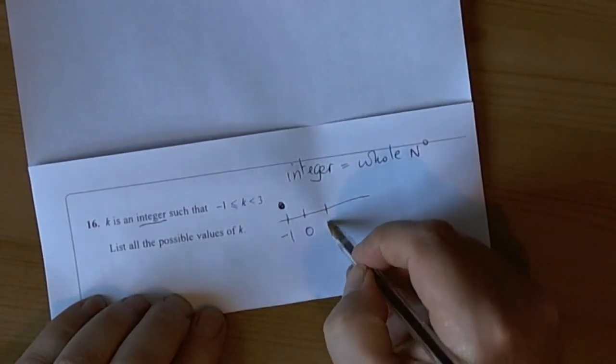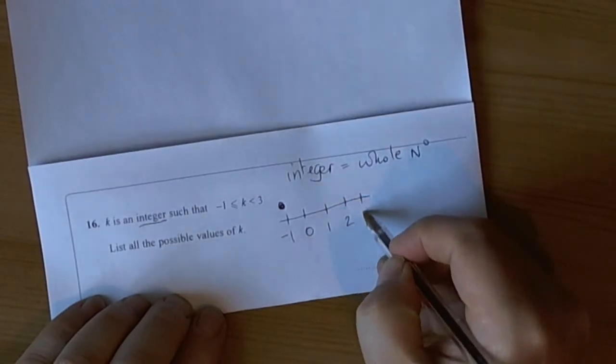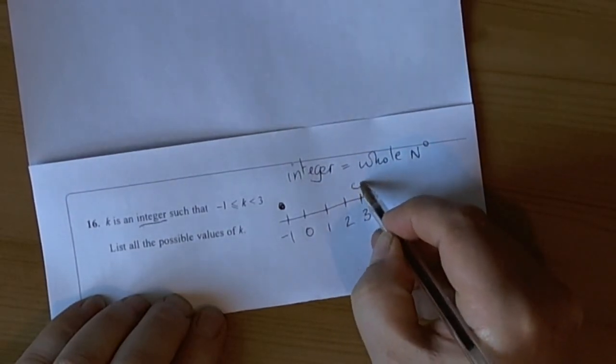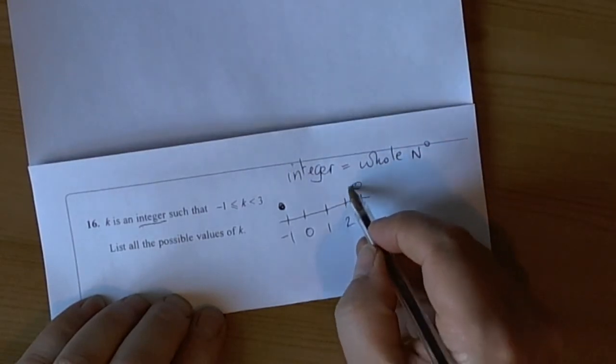So if we go along our number line, 1, 2, 3, it has to be less than 3 so we can't include that, so we put an open circle.